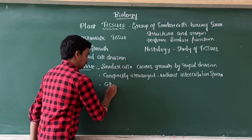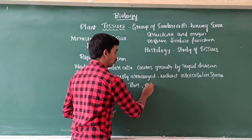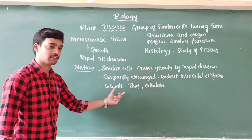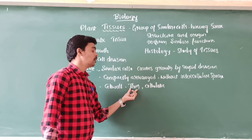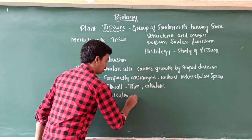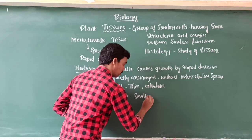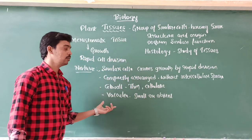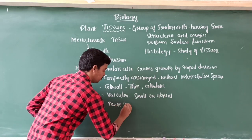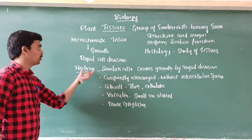Regarding the cell wall: the cell wall is very thin and it is made of cellulose. You are already familiar with cell wall components such as cellulose, semicellulose, pectin, lignin, suberin, etc. But in meristematic tissue the cell wall is thin and made of cellulose. Vacuoles are either small or absent in meristematic tissue. The cells have dense cytoplasm — the cell is filled with protoplasm.